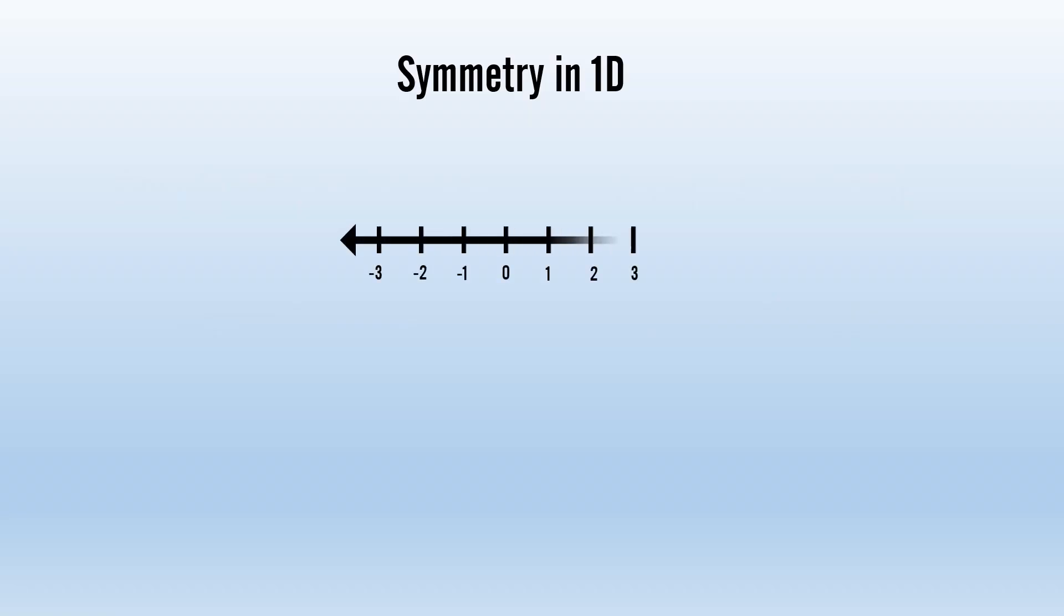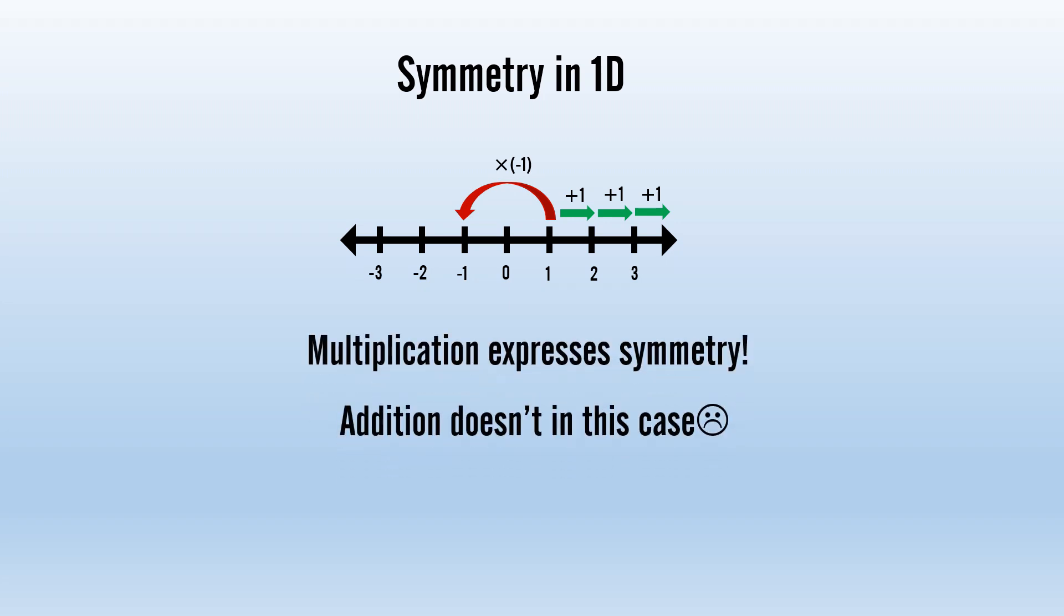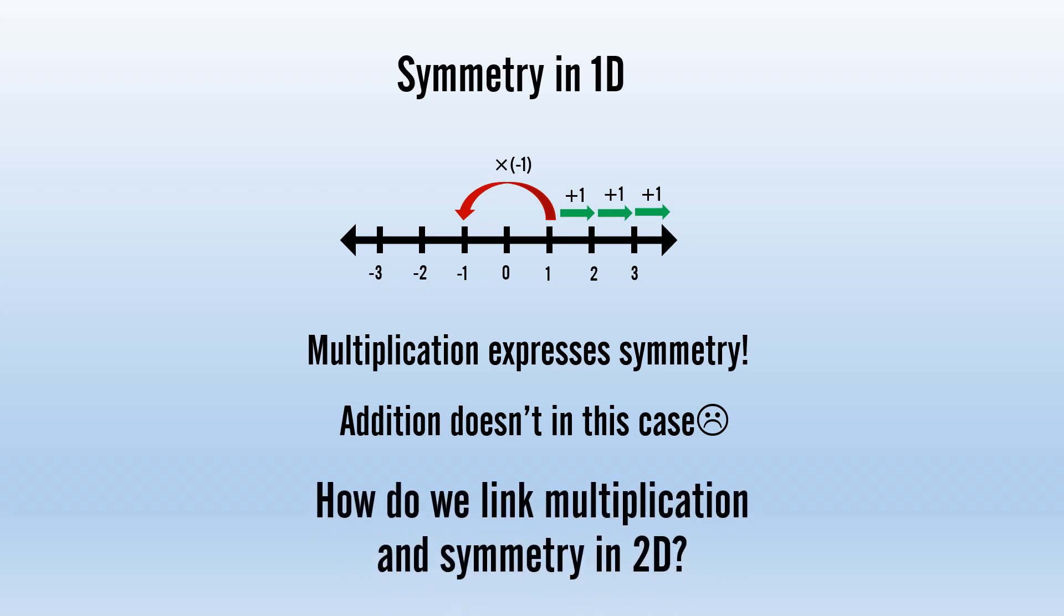If you look at the one-dimensional number line, you will see there is this inherent symmetry around the origin. This reflection can be performed by multiplying a number by negative 1. We can multiply by negative 1 multiple times and reflect back and forth across the origin. So in the algebra of one-dimensional numbers, we have this connection between multiplication and symmetry, and this fact will be very useful to determine how two-dimensional algebras will work.